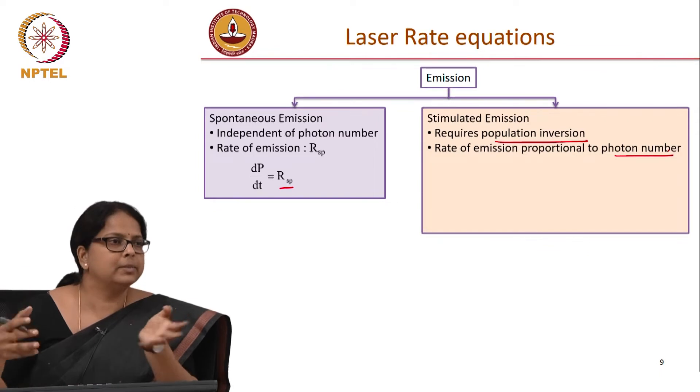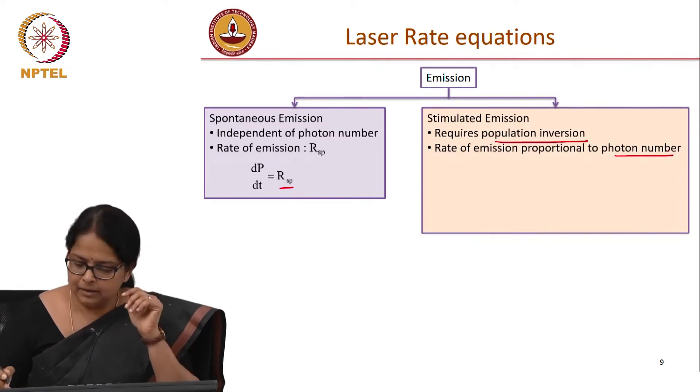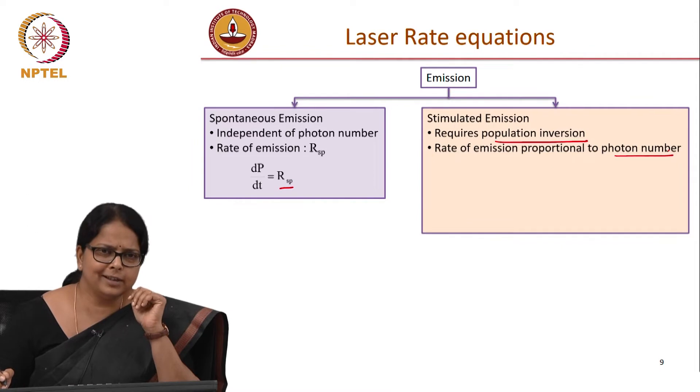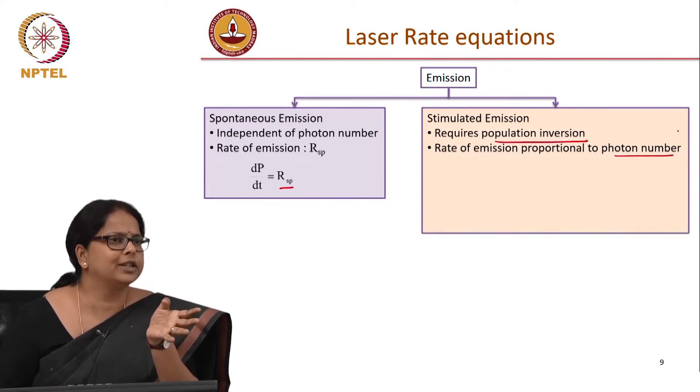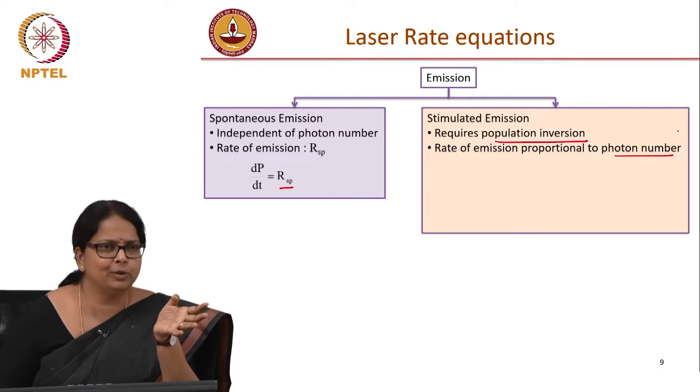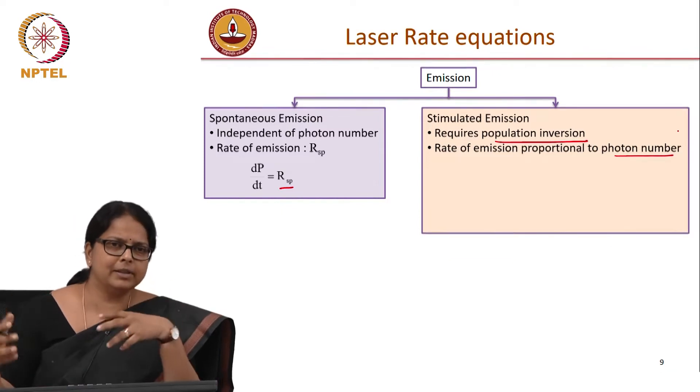In fact, this is Einstein's contribution that it is proportional, the stimulated emission is proportional to the photon number, right? So Einstein wrote down these basic equations long time ago. Even though Einstein is known for its relativity, there are so many other things where he has contributed. So this rate equations, these are called as Einstein's coefficients. This RSP is called as Einstein's coefficients. He came up with this idea about what these rates should be dependent on.